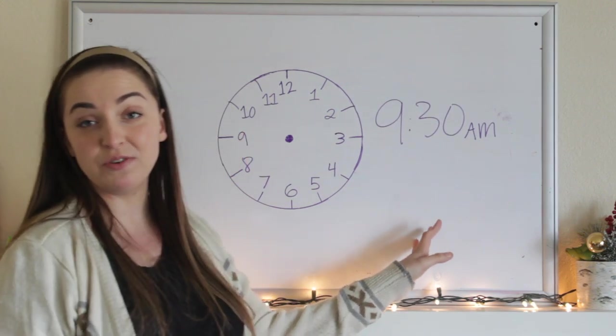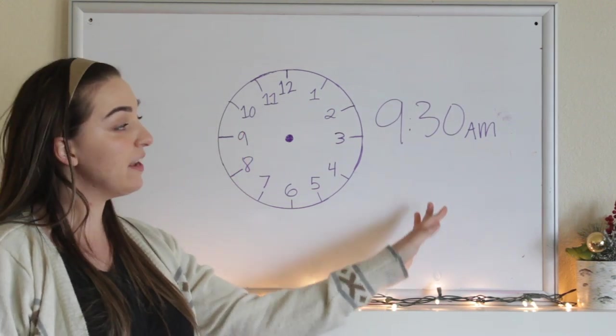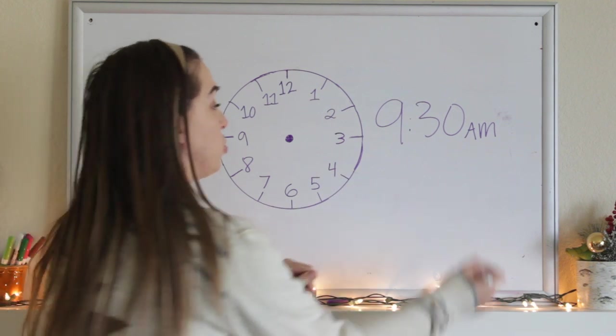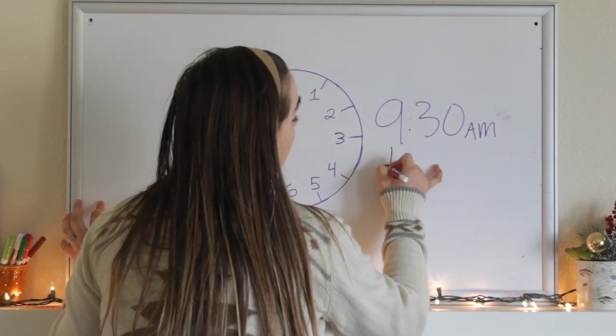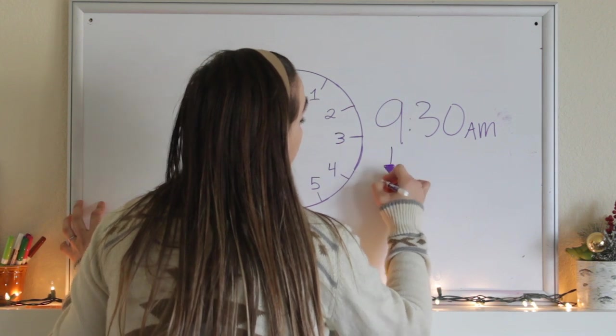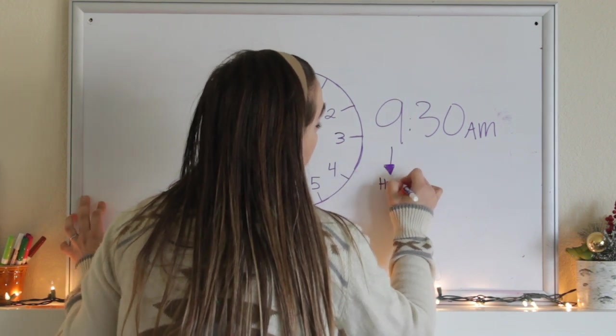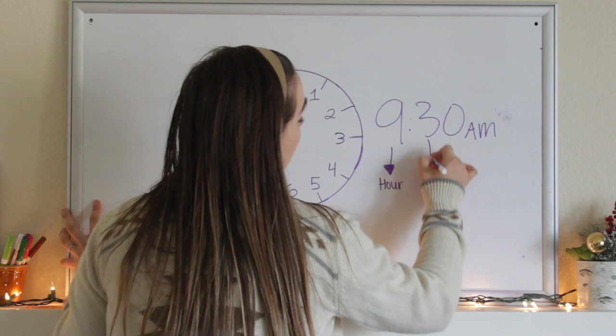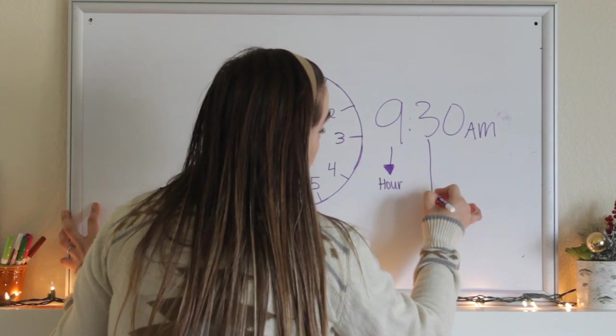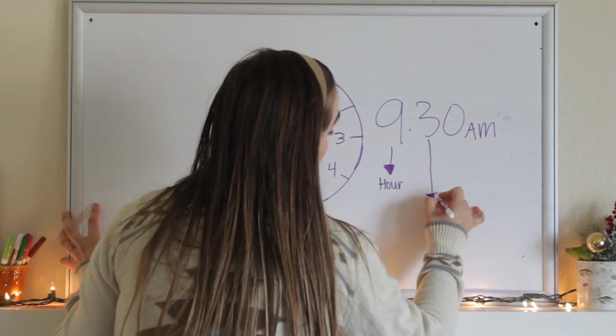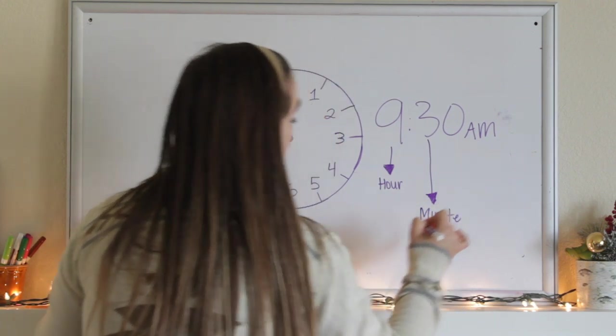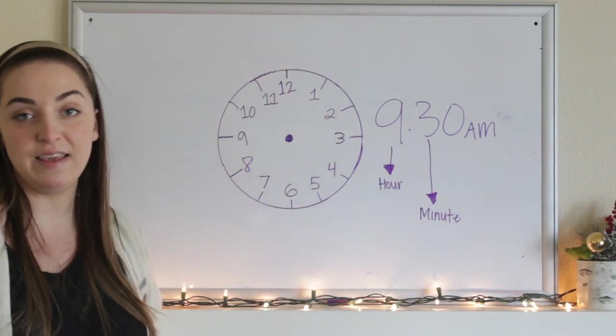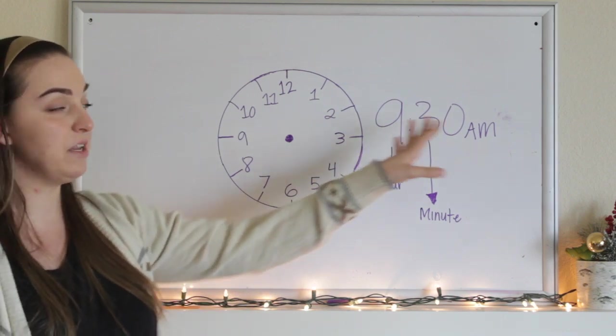The first thing that you need to do is find 9:30. So find 9:30 AM. Remember that the short hand is your hour hand. And I'm just going to put a short hand right here and write the word hour. Remember that your long hand is your minute hand. I'm going to write an arrow and then put minute. All right, go ahead and find the hour and minute 9:30.